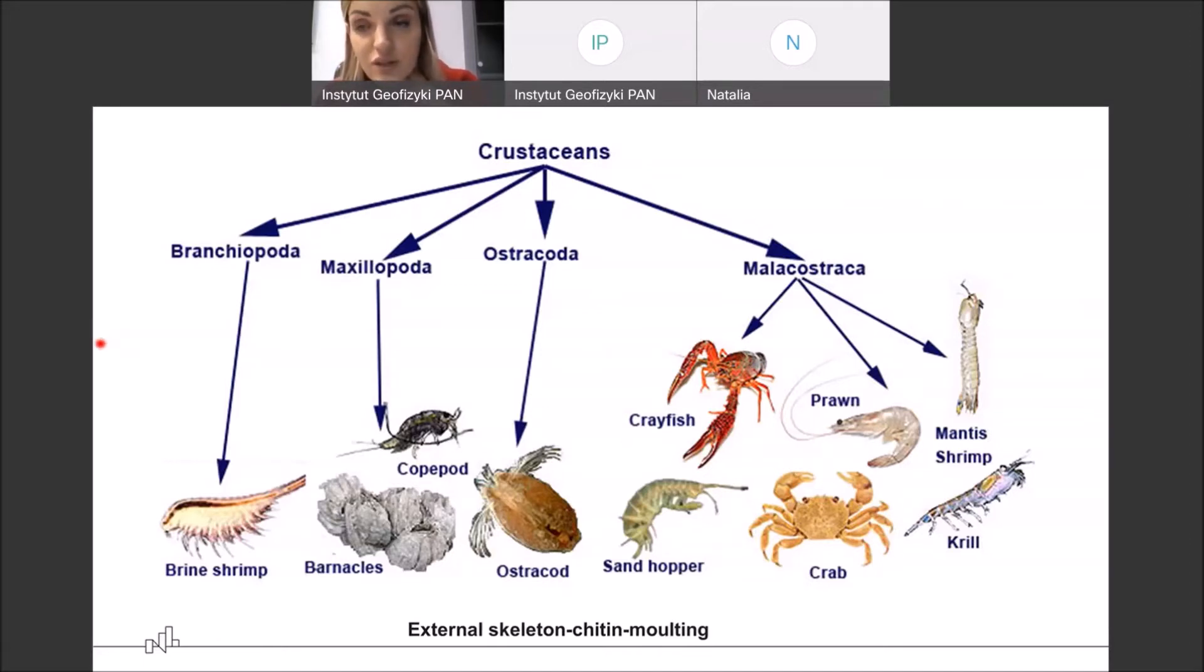And the term crustacean is derived from the Latin word crustaceus meaning having a shell or a crust. So this refers to armor that envelopes their bodies. And this armor is made from a very tough material called chitin. And it's the same for insects on land. This external and very tough rigid skeleton.